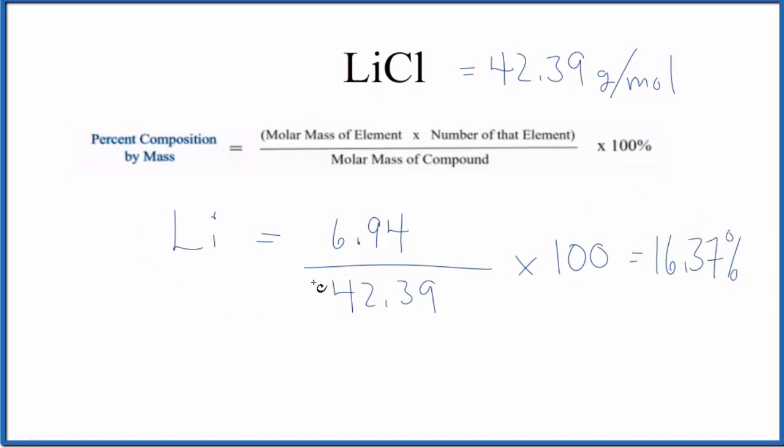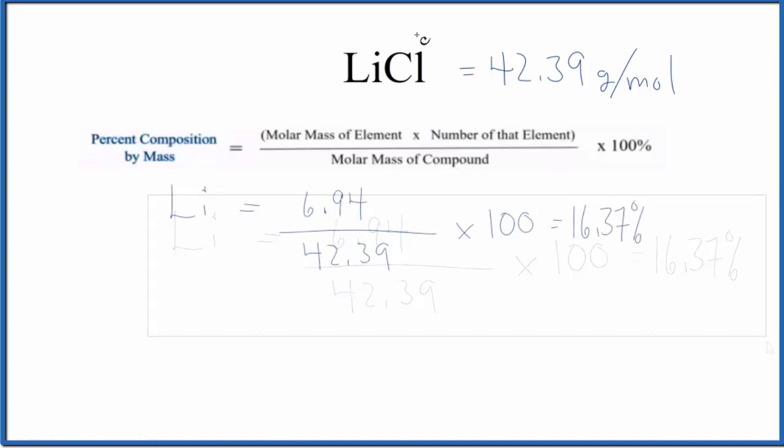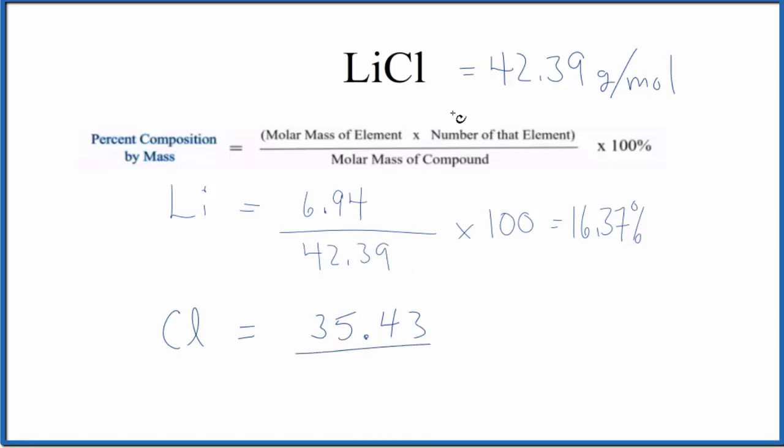And then we just repeat that for the chlorine. So for the chlorine, we have the Cl, and the atomic mass for chlorine from the periodic table is 35.43 grams per mole. We divide that by the entire molar mass for LiCl, 42.39, and we multiply it by 100, and we end up with 83.63%.